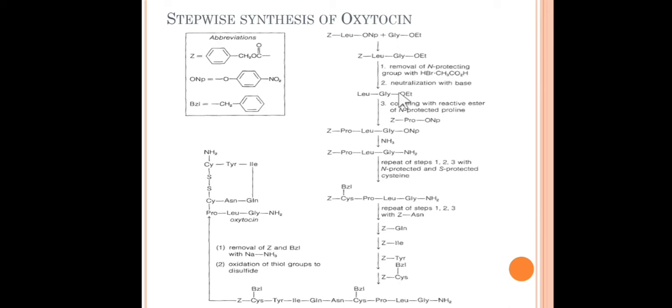This first dipeptide will be treated with Z-protected proline. We get this tripeptide, and then reaction with NH3 will remove this O-NP, ortho-nitrophenol ester. As you know, it is very reactive and easily removed due to the NO2 group. This CO-ONP is now replaced with NH2. We get NH2 here.